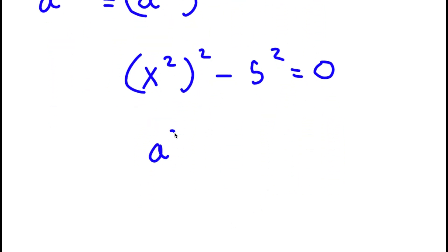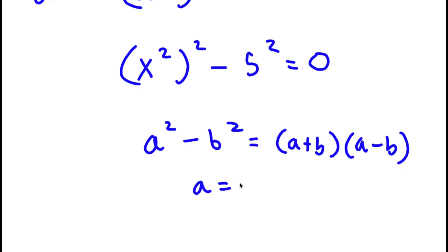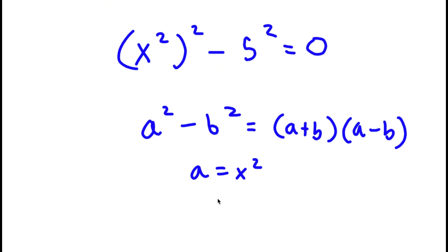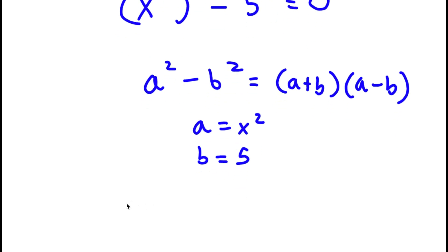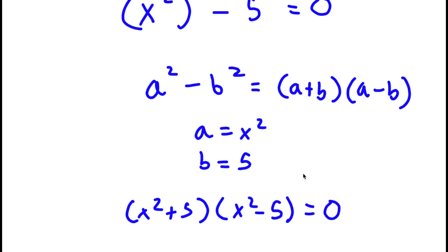If I have something in the form a squared minus b squared, this is equal to a plus b times a minus b. So in this case, a is equal to x to the power of 2 and b is equal to 5. So now I have x to the power of 2 plus 5, times x to the power of 2 minus 5, is equal to 0.